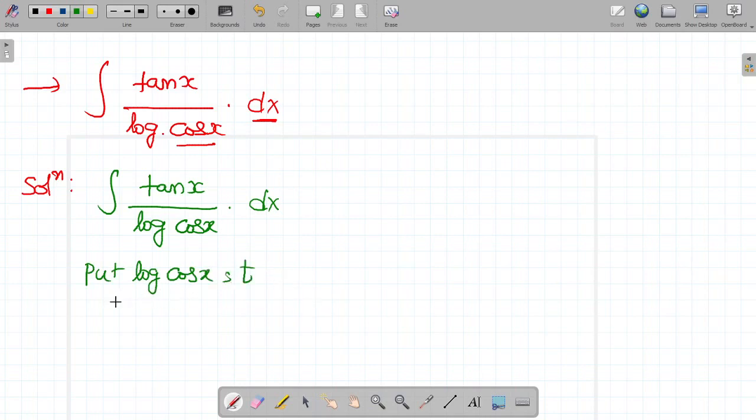Differentiation on both sides. Differentiation of log cos x is 1 by cos x and differentiation of cos x is minus sin x dx equal to dt.